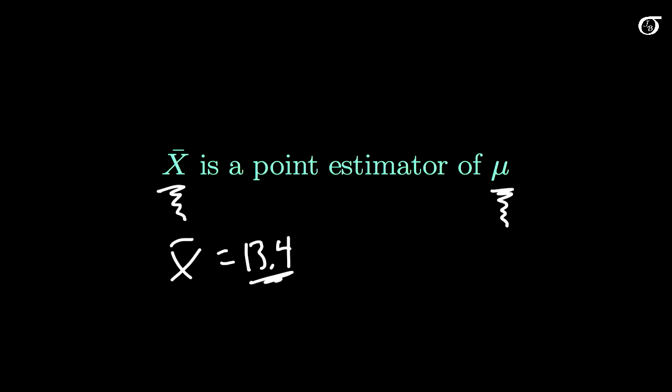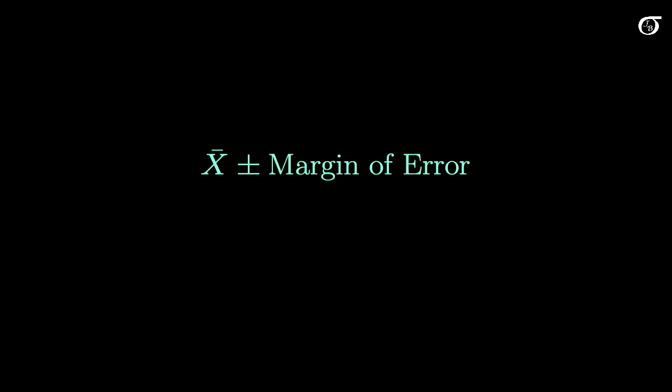How close is x̄ likely to be to μ? There's a variety of ways of going about this, but one way we have is a confidence interval. Now our confidence interval for μ is going to be of the form x̄ plus and minus some margin of error, and we're going to make a few assumptions and then use mathematical arguments to figure out the appropriate margin of error.